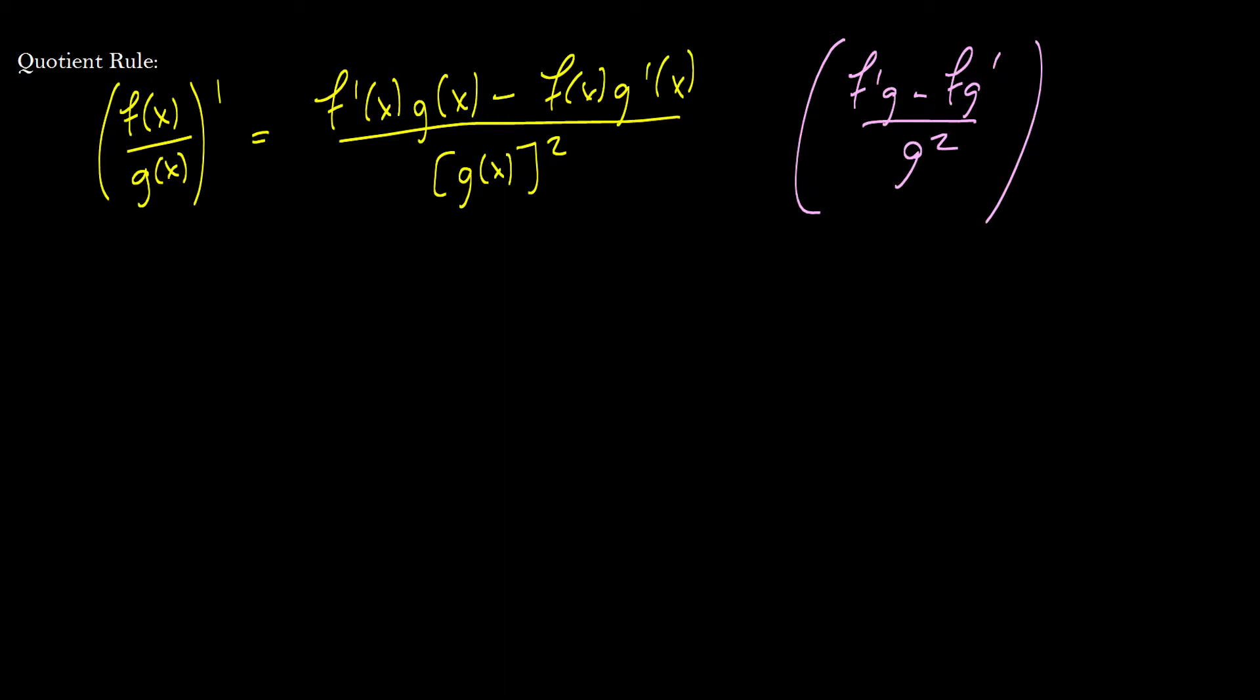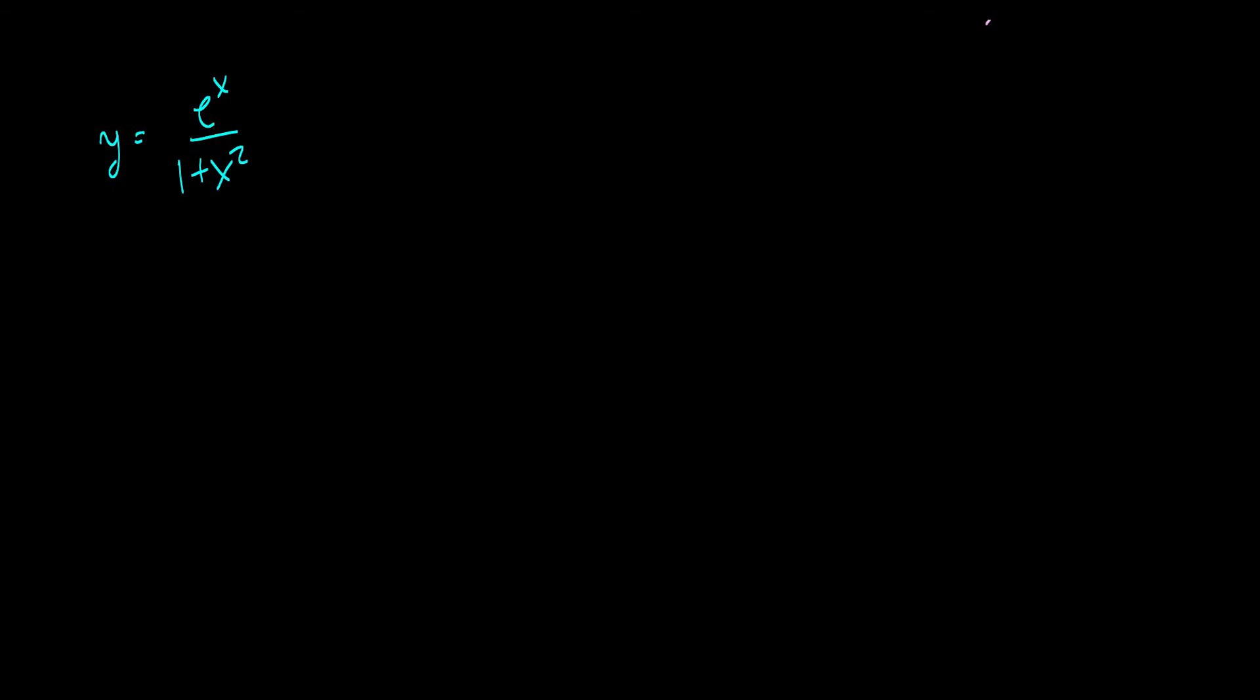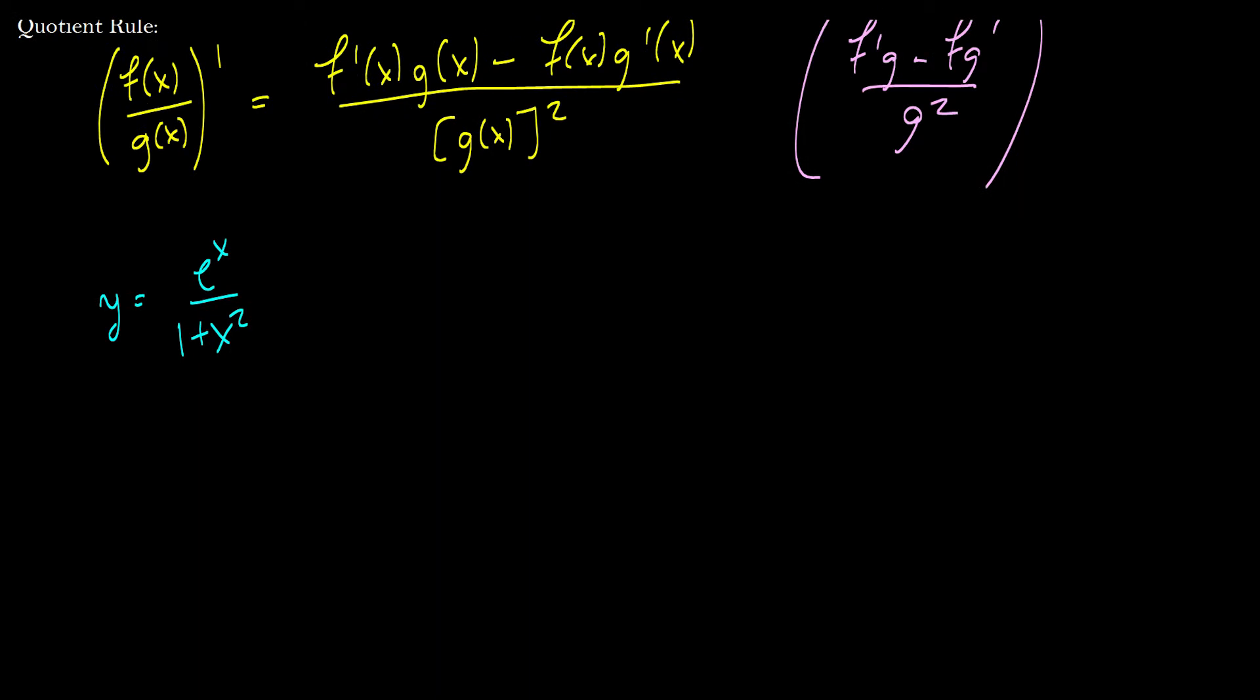So we're going to take a look at the example y equals e to the x over 1 plus x squared. And this is slightly complicated, but hopefully this will make a little bit of sense here. So it's more obvious what our functions are in this because it is f over g. So obviously the top is f and the bottom is g.